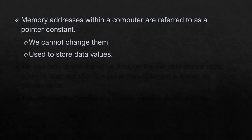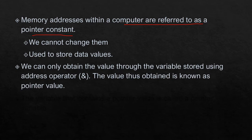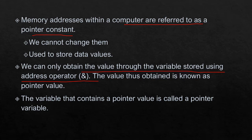Memory addresses within a computer are referred to as pointer constants. We can obtain the value stored at an address using the address operator (ampersand &). The value obtained this way is called a pointer value, and a variable that contains a pointer value is called a pointer variable.